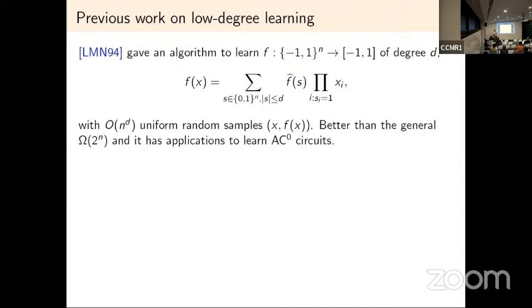This is interesting for two reasons. First, with the structure of being low-degree, you can beat by far the learning algorithm you would use with no structure, because that would require two to the power n random samples. They also gave a first application of low-degree learning to learning AC0 circuits, a family of constant-depth circuits. Since then, many works used these ideas, but it took 30 years to improve the algorithm itself.